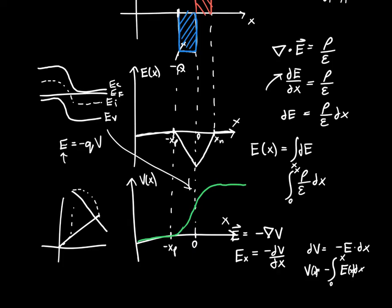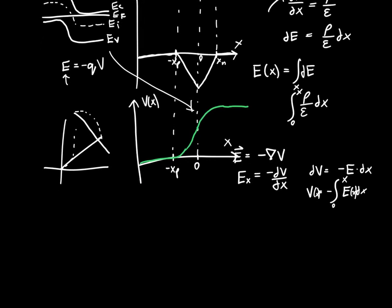And so in this video, I've kind of outlined the procedure for finding the electric field. And in the next video, we're actually going to evaluate the integrals and then get closed-form expressions for the electric field and the depletion width as a function of the built-in potential VBI and the doping concentrations NA and ND, as well as constants like the permittivity. So I hope you enjoyed the video, and I'll see you next time.